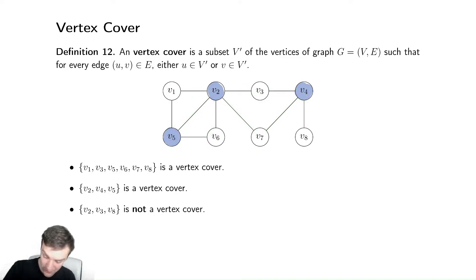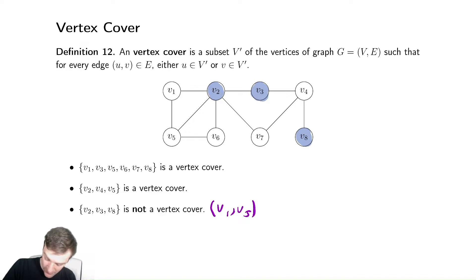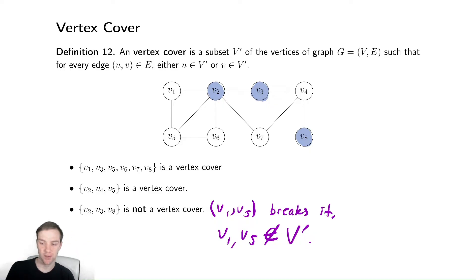Let's check out something that's not a vertex cover. We have V2, V3, V8. That touches one — oops, that doesn't work. V1 and V5 break it. We have V1 and V5, both are not in V prime, so it's not a vertex cover.